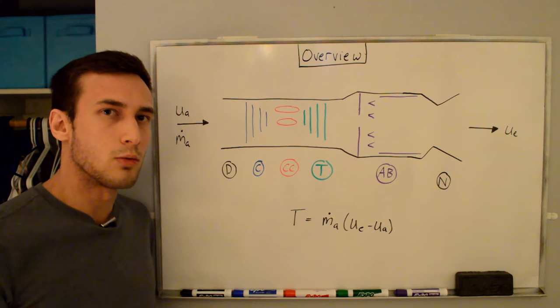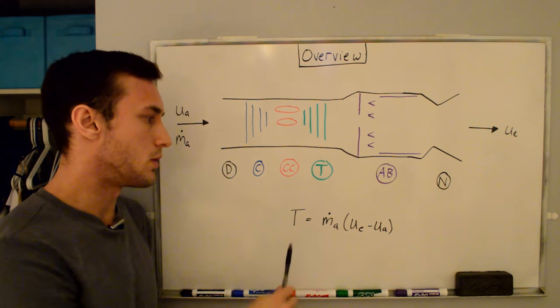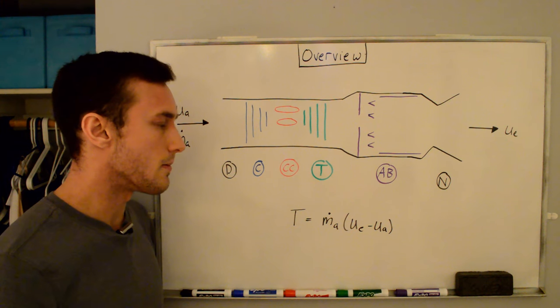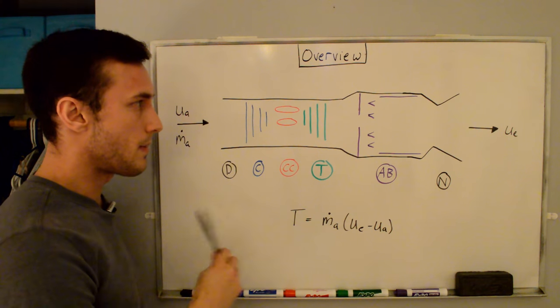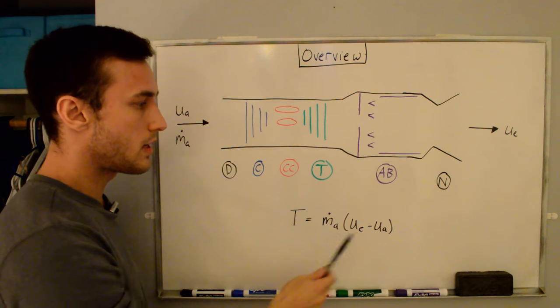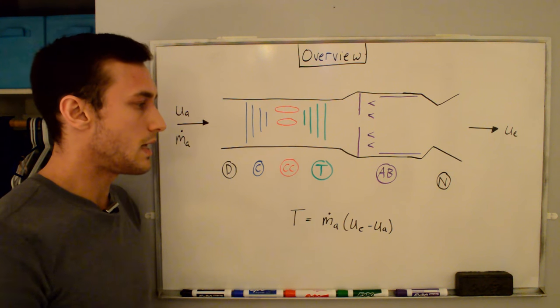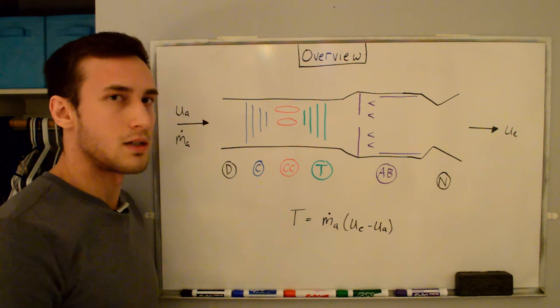The thrust of an engine essentially boils down to the change in momentum of the gas that's going through the engine, as you can see in the simplified thrust equation right here. So in a normal engine, the gas is coming out the back of an engine with no afterburner still has a pretty high exit velocity, but let's say we wanted to increase the thrust by increasing the exit velocity even further.